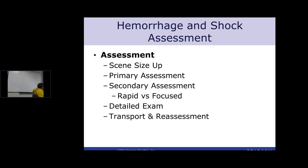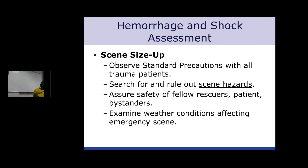Assessment of hemorrhagic shock: same as any assessment — scene size-up, primary assessment, secondary assessment (rapid and focused), detailed exam, and reassessment during transport. Safety is first. Consider weather conditions affecting the emergency scene and their effect on transport decisions. Mechanism of injury is always extremely important — you need to know it to account for possible internal hemorrhage or spine injury. Determine the time elapsed since injury and the amount of blood loss. These are critical factors, especially when calling in a report.